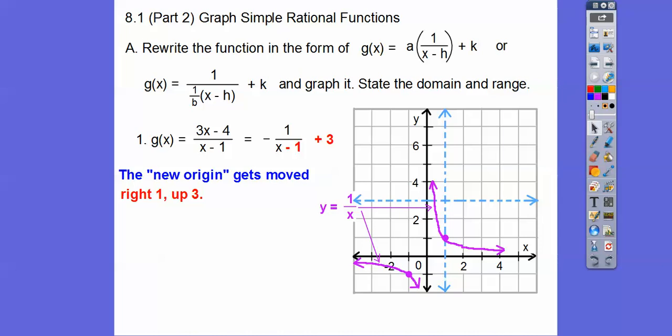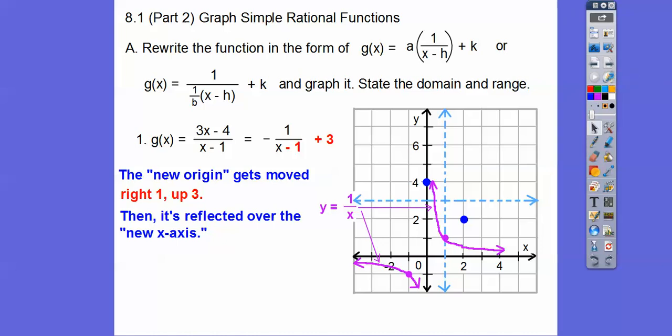Now, we'll start from the new origin. This graph still goes to the right 1, but that negative says we're going to go down 1. So we put a point right there. The parent graph goes to the left 1, down 1 — so this one's going to go to the left still, but since the other went down, this one's going to go up. So we put a point right there. Then our graph just flares towards the new asymptotes: x equals 1 and y equals 3.